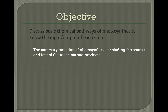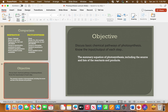By now you should know the basic chemical pathways of photosynthesis, the input and output of each step, and be able to produce that summary equation from memory. If you have any questions, make sure you jot them down and bring them to student office hours or class so we can chat about them. Thank you for watching.